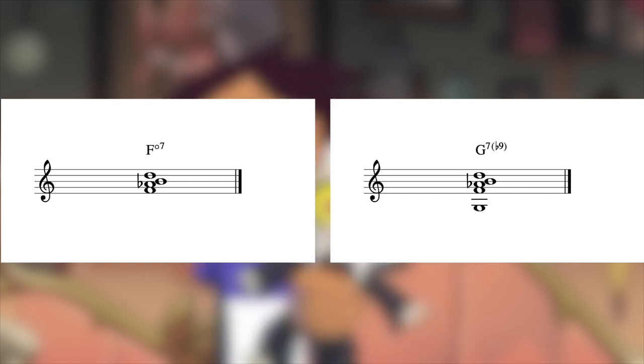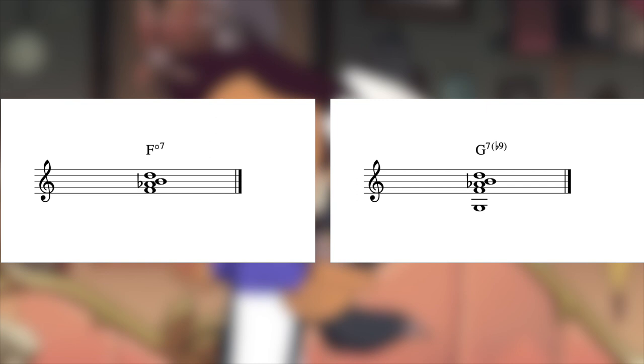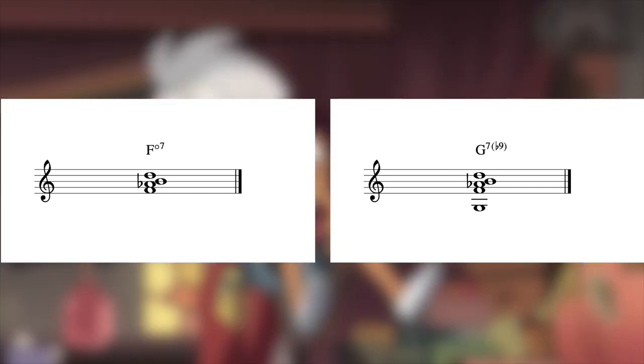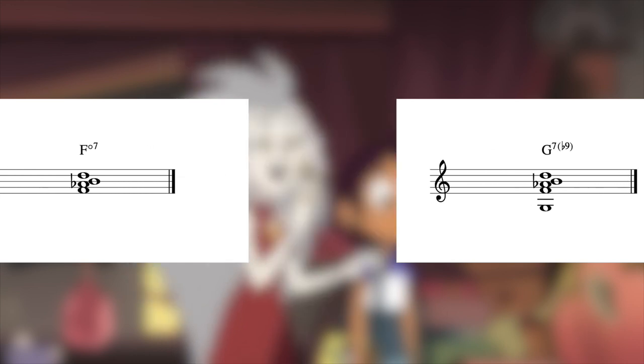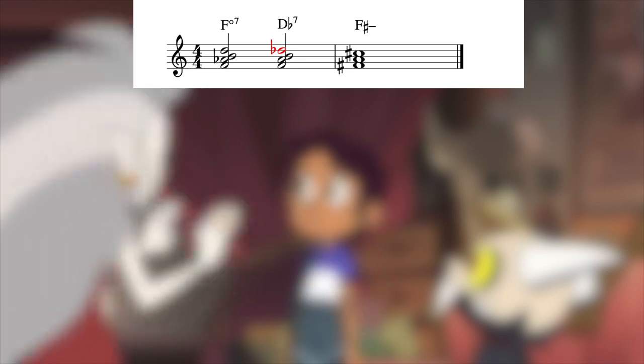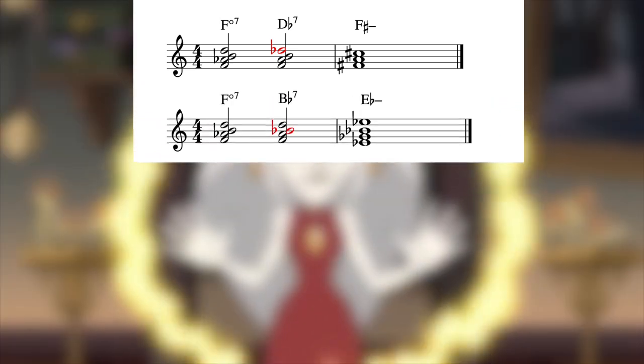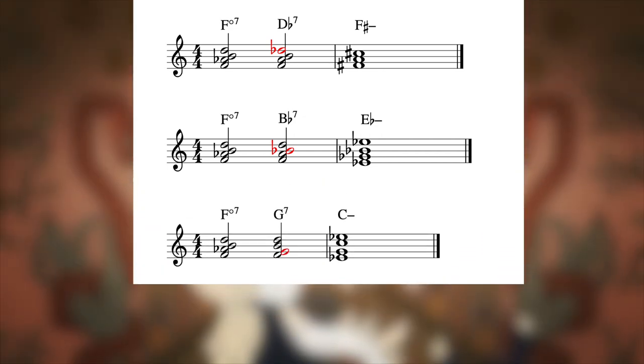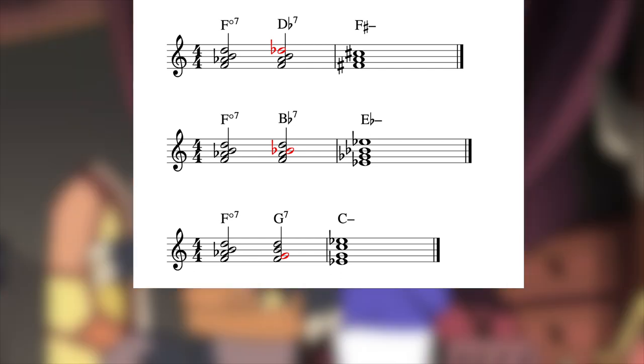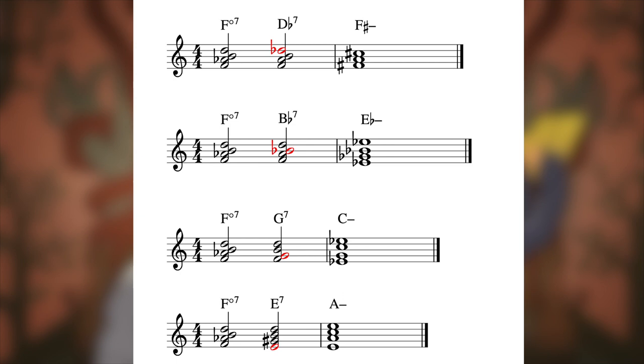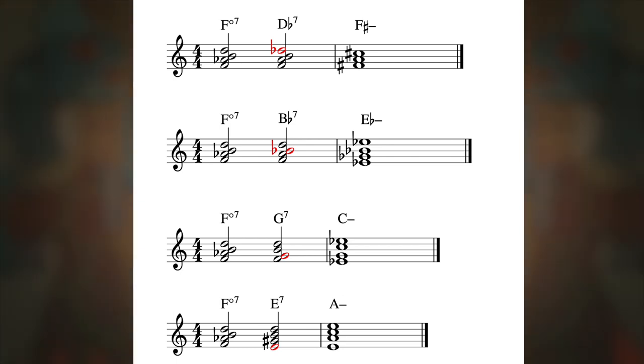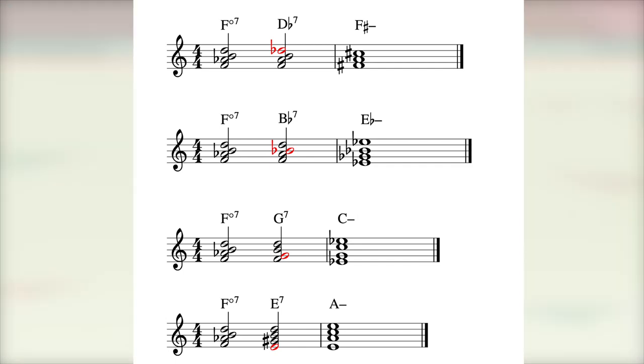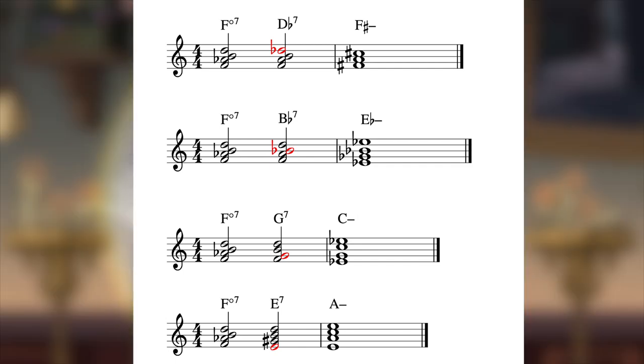Something fascinating is that if you drop down one of the four notes in the diminished 7 by a half step, you'll get one of four different dominant 7 chords, which naturally want to resolve down a 5th. Let's see what happens when we alter each note in the F diminished 7. As you can see, depending on how you interpret which note wants to pull downwards, it could resolve to any of the four tonal centers in our axis.